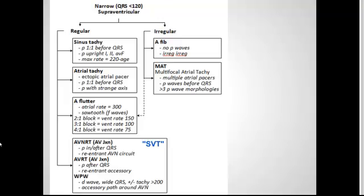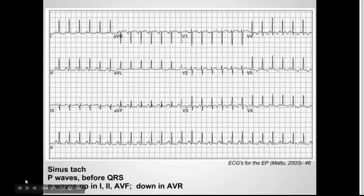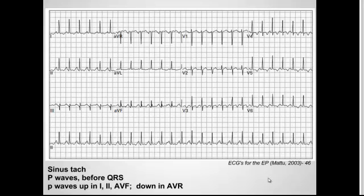Let's start with sinus tachycardia — I have all the answers at the bottom, but you can try to find each characteristic in the EKG above. You're going to first look for a narrow complex that's regular. Next, look at the P waves: we do see a P wave before every QRS. Another thing to look at is the axis — the P waves should be upright in leads I, II, and aVF, and down in aVR. So here it's up in I, II, and aVF and down in aVR.